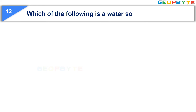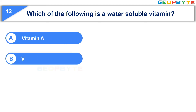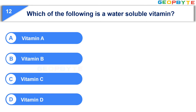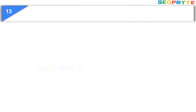Which of the following is a water-soluble vitamin? Option A: Vitamin A. Option B: Vitamin B. Option C: Vitamin C. Option D: Vitamin D. Your time starts now. Your time is up and the correct answer is Option B: Vitamin B.